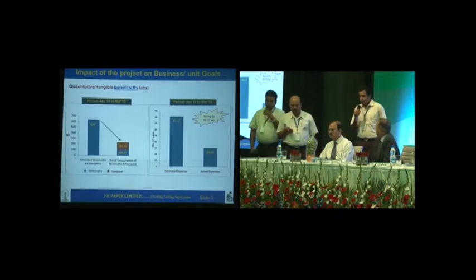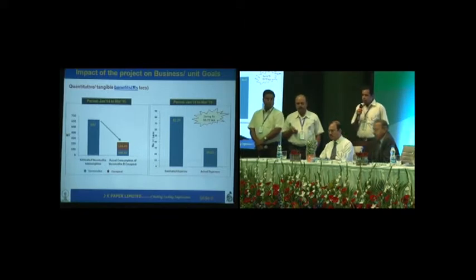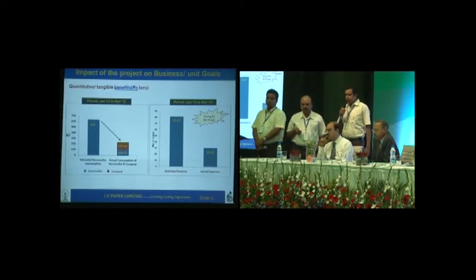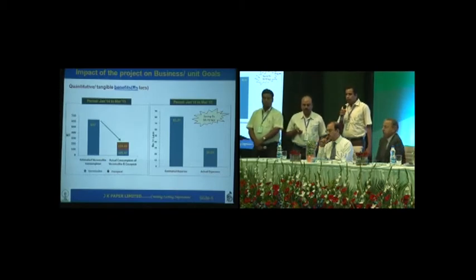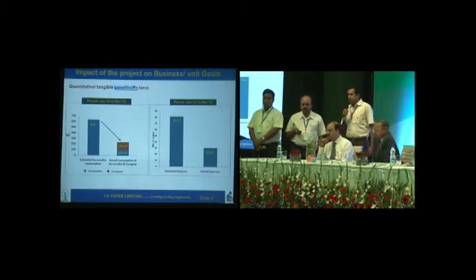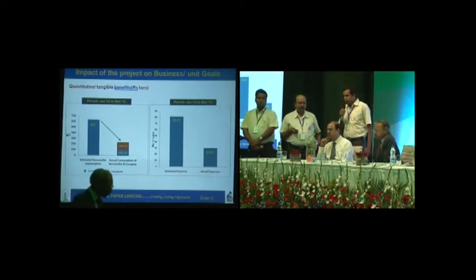Coming to the quantitative and tangible benefits: our project period is 15 months. In that period, the estimated vermiculite consumption was 637 metric tons, but we actually used only 105.47 metric tons and substituted with 134.43 metric tons of coco peat. Against an estimated budget expense of 81.37 lakhs, we actually spent only 30.65 lakhs, resulting in a saving of 50.72 lakhs.